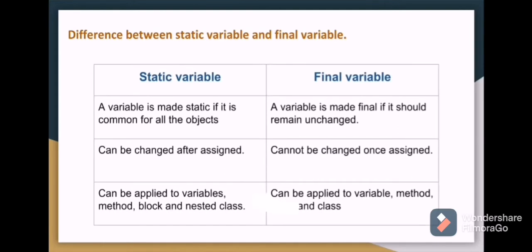Let's see some more differences. A variable is made as static if it is common for all the objects, whereas a variable is made as final if it should remain unchanged. This static variable can be changed after assigned, whereas final variable we cannot change once assigned. Static variable can be applied to variables, methods, blocks and nested classes. Here final variable can be applied to variables, method, class.